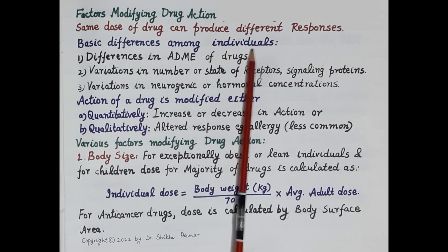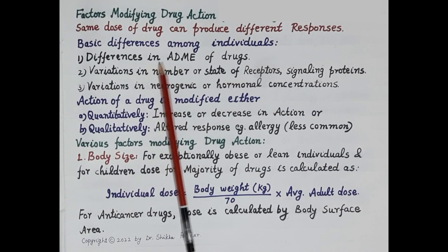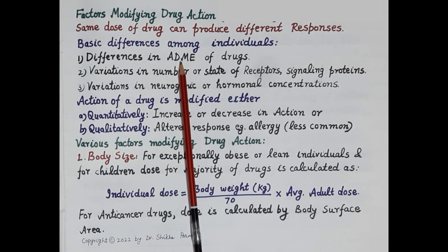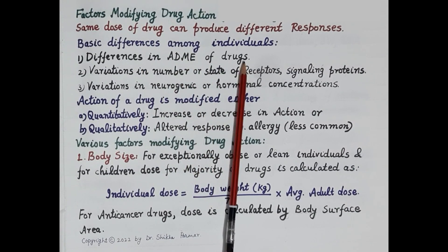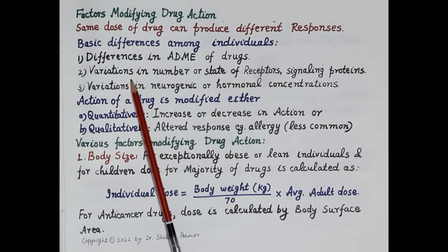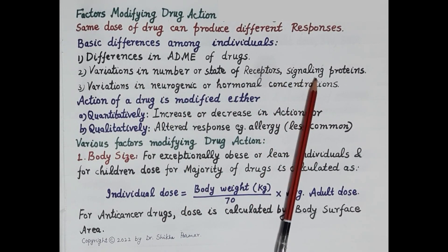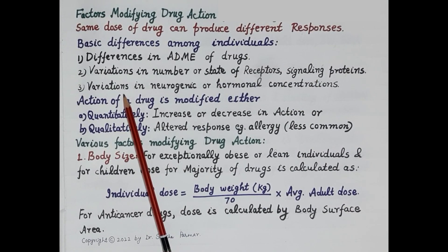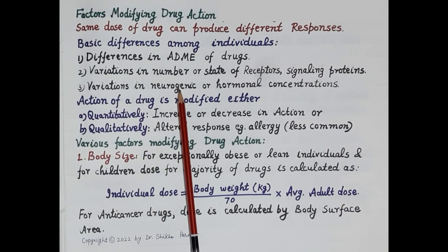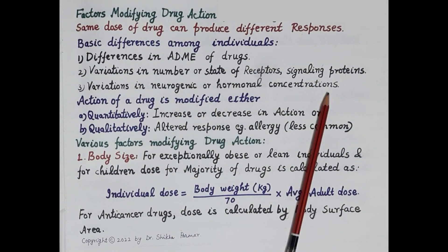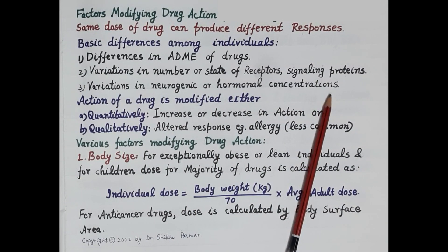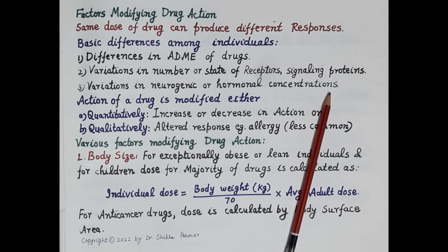Differences in responses occur due to three basic differences among individuals. First, differences in the administration, distribution, metabolism, and excretion of drugs. Second, variation in the number or state of receptors, and variation in the signaling proteins responsible for producing cellular responses. Third, variation in the neurogenic or hormonal concentrations.